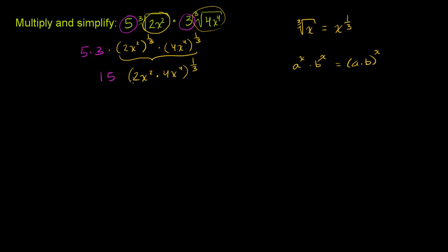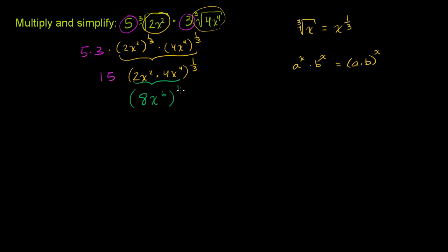If we simplify what's inside the expression — it's commutative and associative, so we can swap the order and groupings — this is 2 times 4, which is 8 (not 6 — I was adding the exponents in my head), times x squared times x to the 4th. x squared times x to the 4th is x to the 6th, because we add the exponents when they have the same base. So we have 8x to the 6th to the 1/3 power, all times 15.